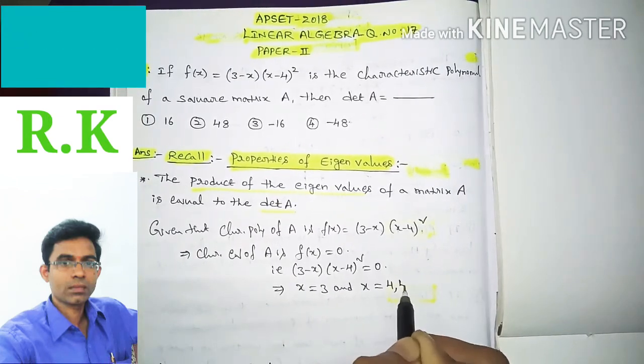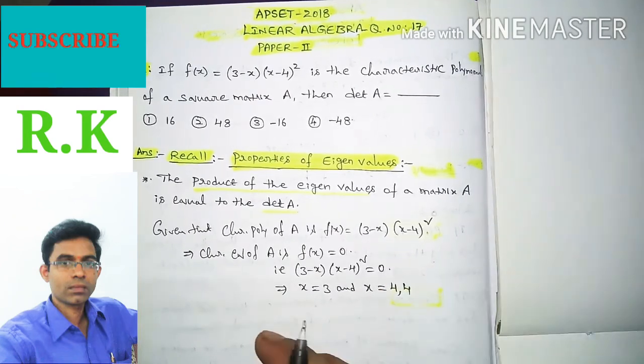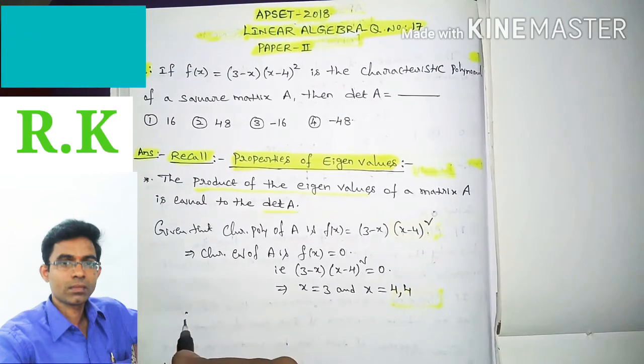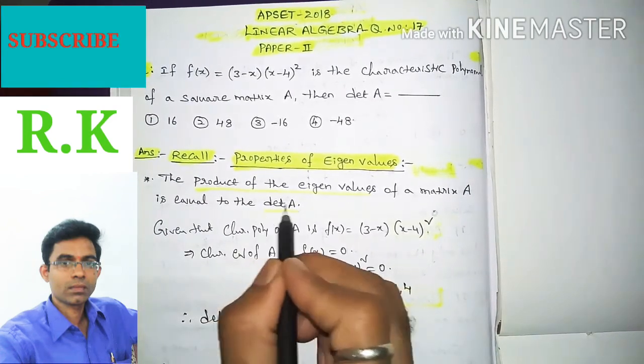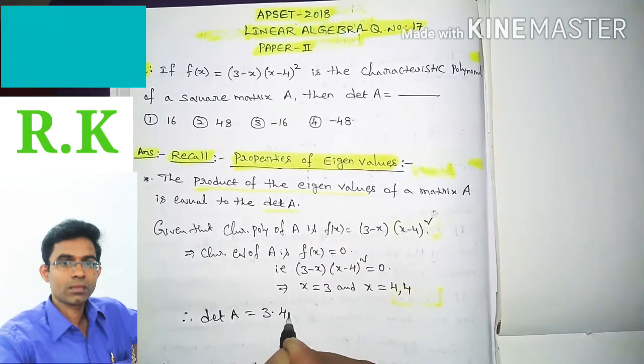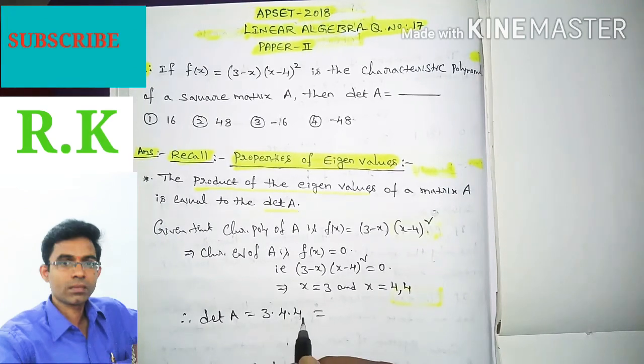So these three are eigenvalues or characteristic values of given matrix capital A. Therefore, det A is equal to product of eigenvalues, that means 3 × 4 × 4.